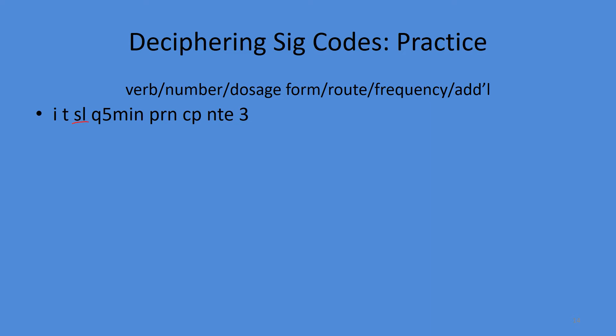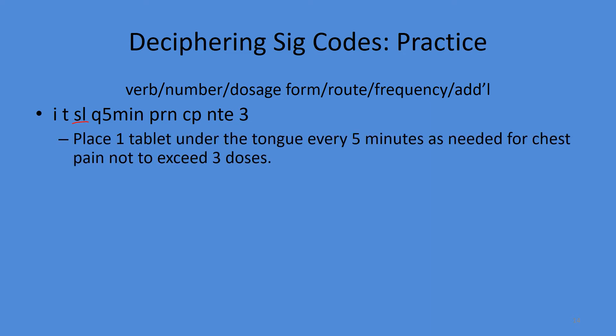For 'SL,' find the verb by finding the route. SL is sublingual, so the verb is 'place.' Translation: place one tablet under the tongue every five minutes as needed for chest pain, not to exceed three doses. This is very common for nitroglycerin sublingual angina medication — if pain is not relieved, it is most likely a heart attack.